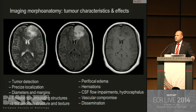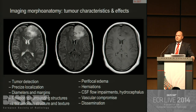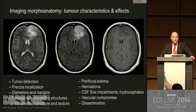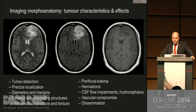We would not be neuroradiologists unless we enter deeper into morphoanatomy. What we have is the possibility to determine tumor characteristics and describe all of the side effects of tumor presence. That means not only tumor detection and precise localization, but also definition of diameters and margins, and the tumor's relation to surrounding structures.